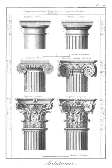Quadriporticus (also quadriportico): a four-sided portico; the closest modern parallel would be a colonnaded quadrangle. Quoin: the cornerstones of brick or stone walls. Quoins are also common in some brickwork corners that are alternately recessed and expressed.